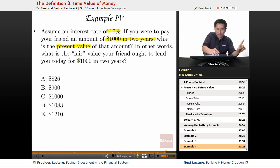In other words, what is the fair value your friend ought to lend you today for $1000 in two years? It's an interesting question. You just basically plug and chug with this formula.